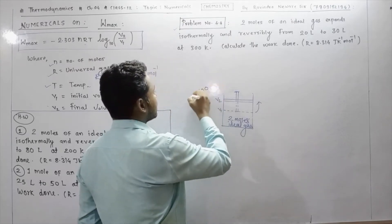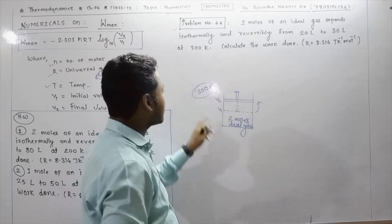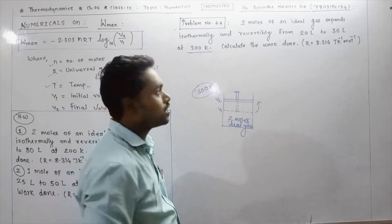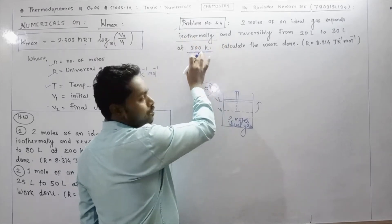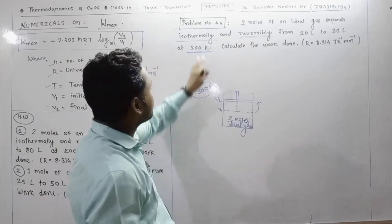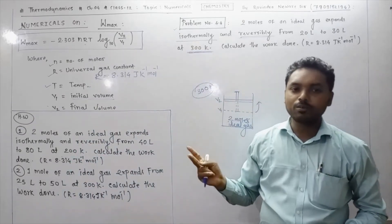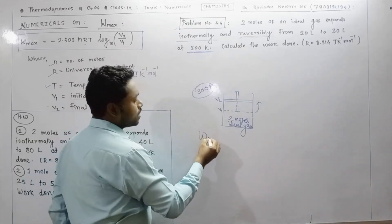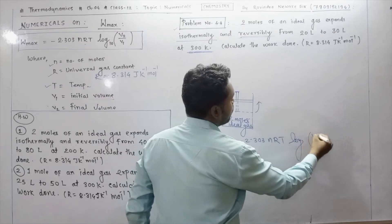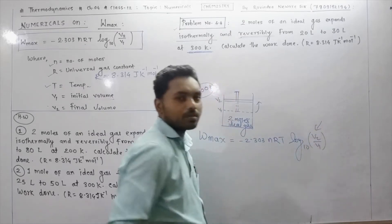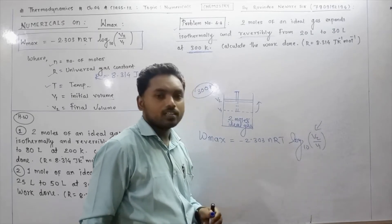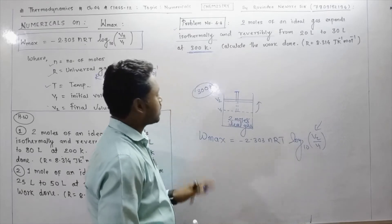The expansion occurs isothermally at a constant temperature of 300 Kelvin. Since the process is isothermal and reversible, we have to use the formula: Wmax is equal to minus 2.303 nRT log of V2 upon V1. If volume terms are given, use V2 upon V1; if pressure terms are given, use P1 upon P2.